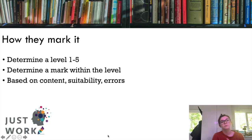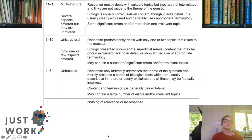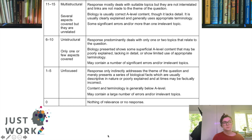First we determine a level — one to five. You can actually get level zero if you don't write anything or if everything you write is completely irrelevant. Within that level there are bands, and the mark within the band is based on content, suitability of content, and any errors. Level one, one to five marks, is an unfocused response that only indirectly addresses the theme of the question and mainly presents a series of biological facts that are usually descriptive in nature or poorly explained.